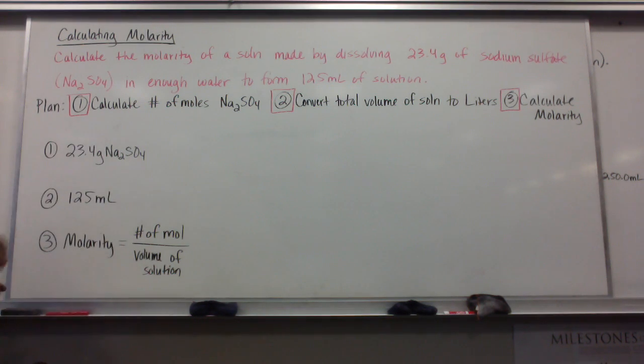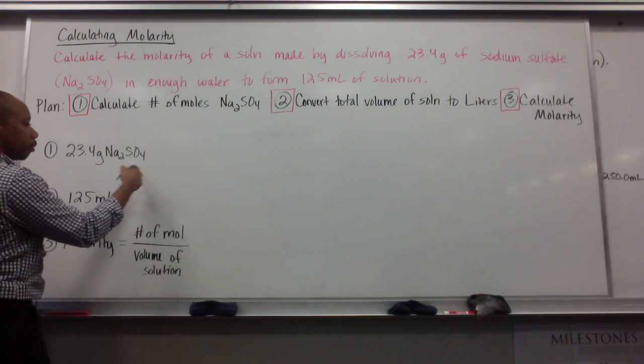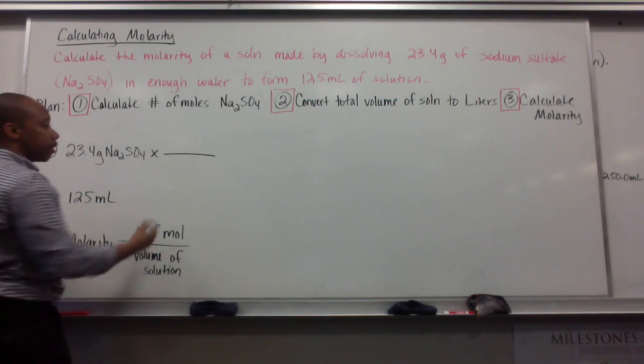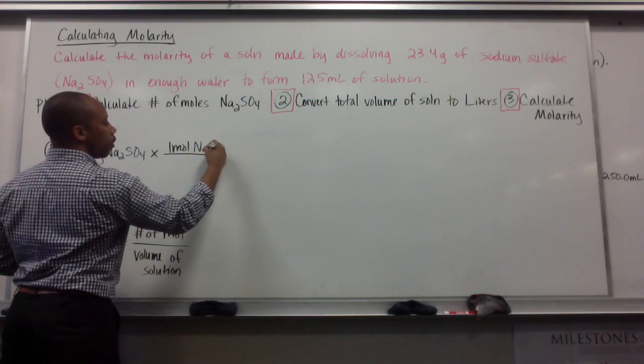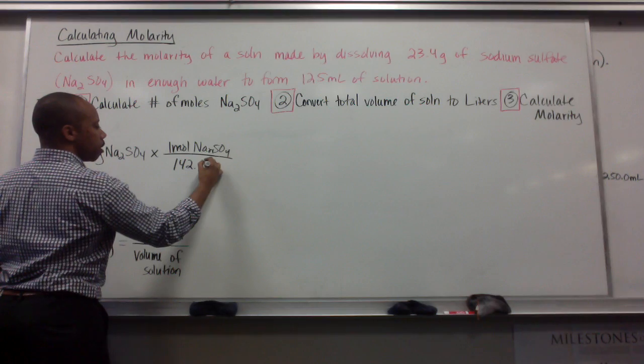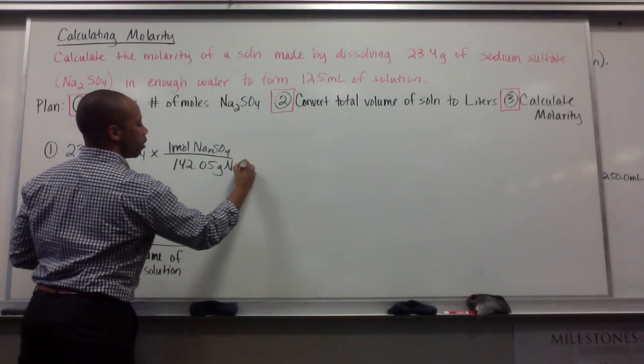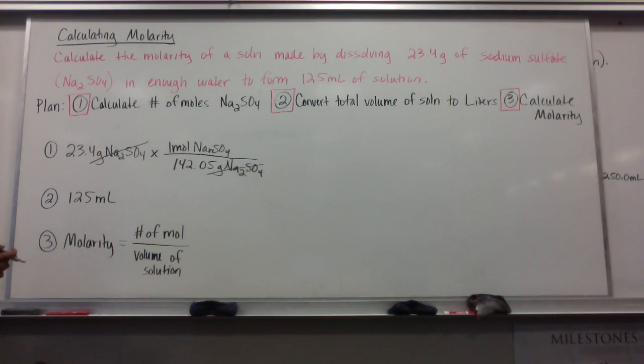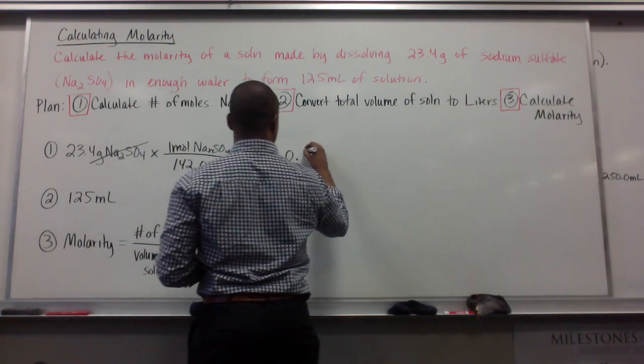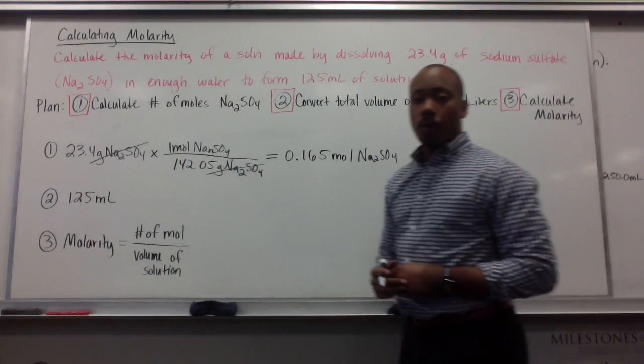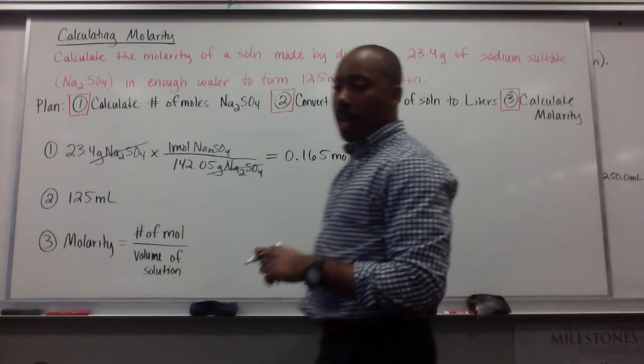First, calculate the number of moles of your sodium sulfate. We're dissolving 23.4 grams of sodium sulfate. So we're going to find the number of moles that 23.4 grams is equated to using the molar mass. For every one mole of sodium sulfate, I'll have 142.05 grams of sodium sulfate. My grams cancel, and I'm left with 0.165 moles of Na2SO4.